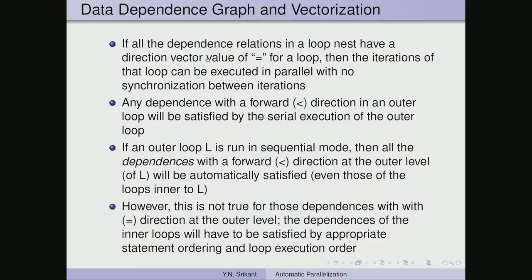For concurrentization: if all dependence relations in a loop nest have a direction vector of equal to, then the iterations of the loop can be executed in parallel with no synchronization between iterations. If the direction vector value is equal to for a particular loop, all dependences are in the same iteration and do not flow across iterations, so iterations can be executed in parallel.